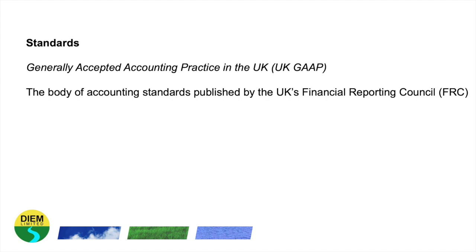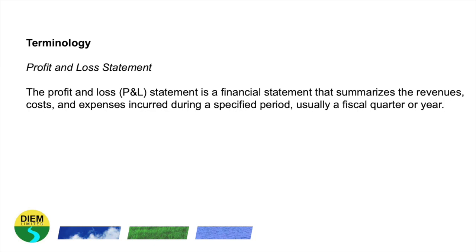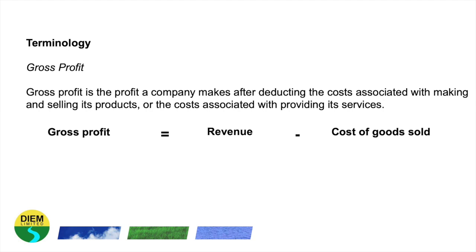We're now going to look at some accounting terminology, starting with the Profit and Loss Statement. The Profit and Loss, or P&L, statement is a financial statement that summarises the revenues, costs and expenses incurred during a specified period, usually a fiscal quarter or year. Gross Profit is the profit a company makes after deducting the costs associated with making and selling its products, or the costs associated with providing its services. So Gross Profit equals revenue minus costs.